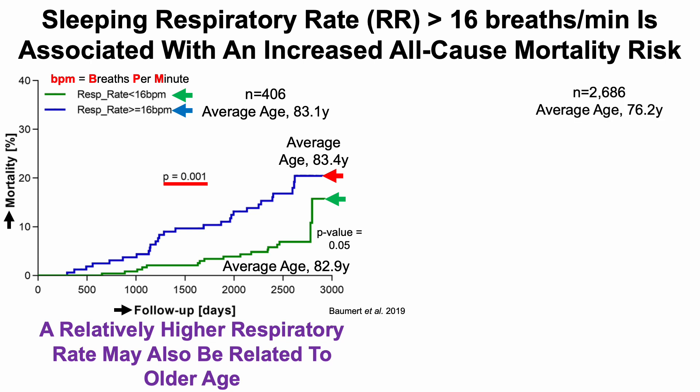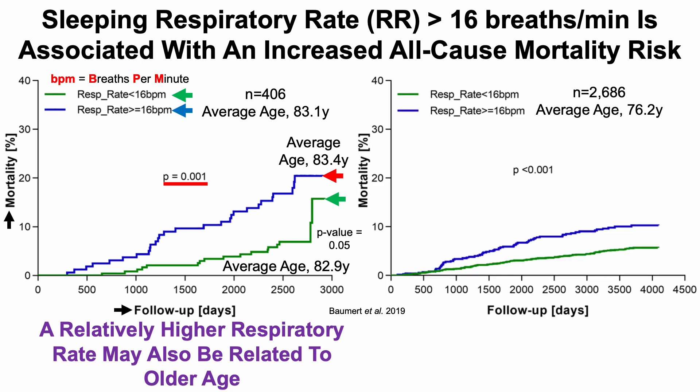In another study of about 2,700 people with a slightly younger cohort — average age 76.2 years — we can see similar data. Again, we've got higher all-cause mortality for people who had a nighttime sleeping respiratory rate greater than 16 breaths per minute shown in blue, and significantly lower all-cause mortality for the group with a nighttime sleeping respiratory rate less than 16 breaths per minute shown in green.